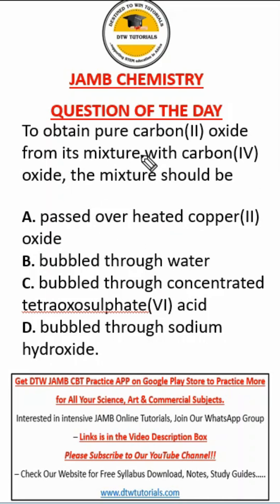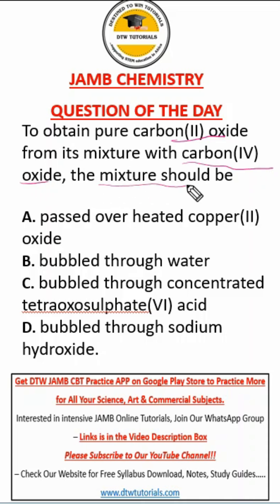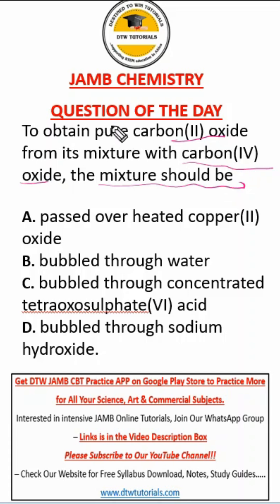Look at this JAMB chemistry question. It says to obtain pure carbon monoxide (CO) from its mixture with carbon dioxide (CO₂). The mixture should be — remember in the preparation of carbon monoxide — to get pure carbon monoxide, I hope you know that diagram.